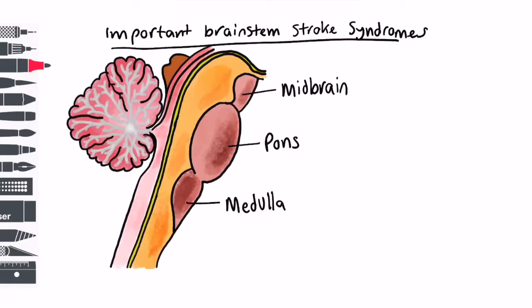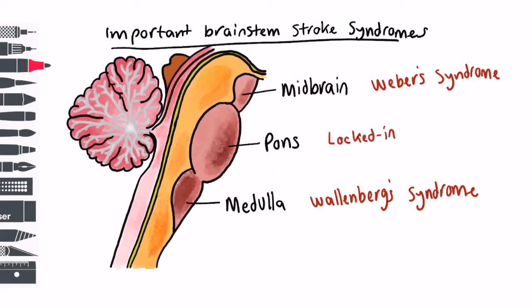Now we can piece this information together to predict the likely symptoms from a brainstem stroke. Here I'll talk about a syndrome affecting the medulla, another syndrome affecting the midbrain, and finally a syndrome affecting the pons.